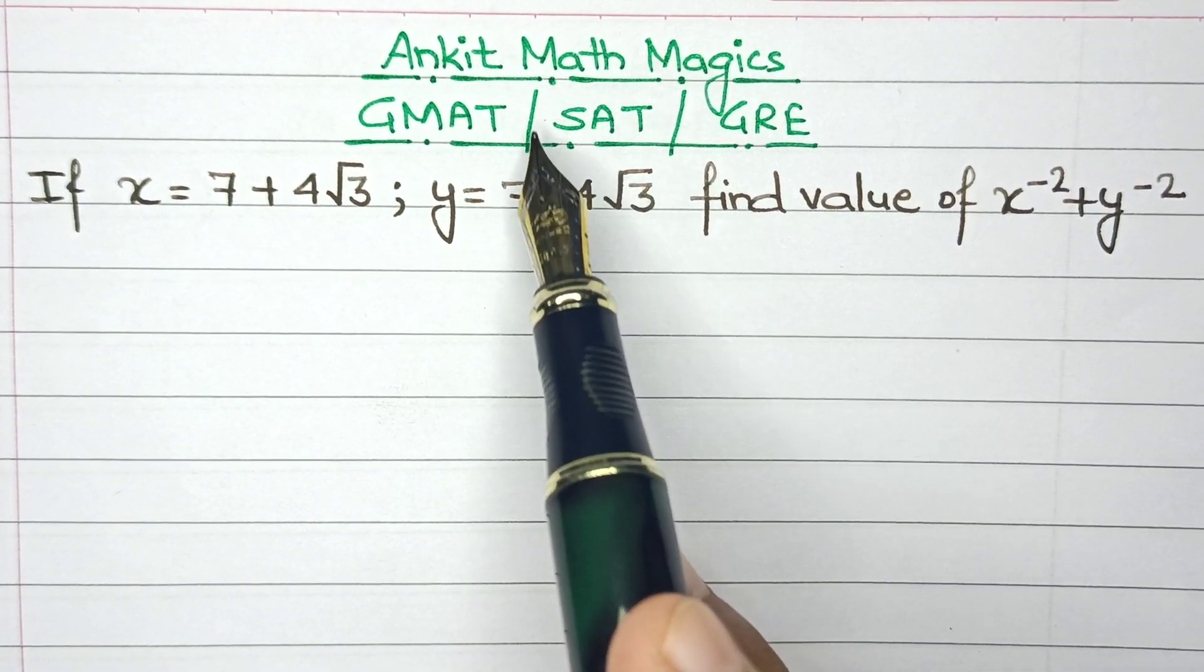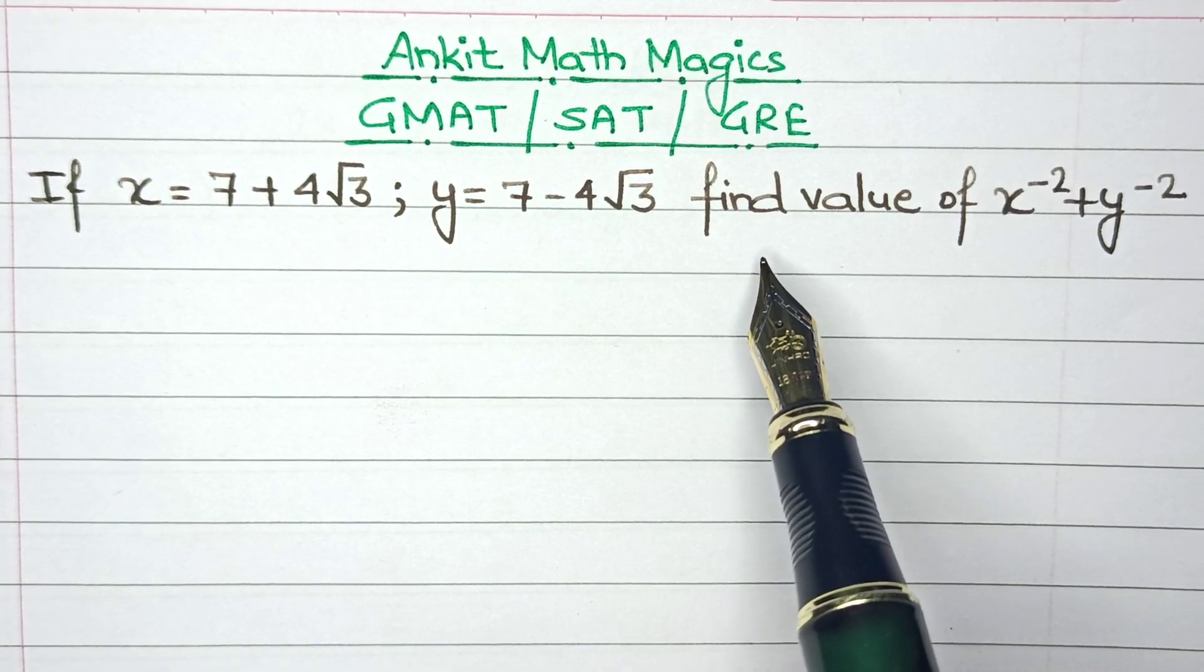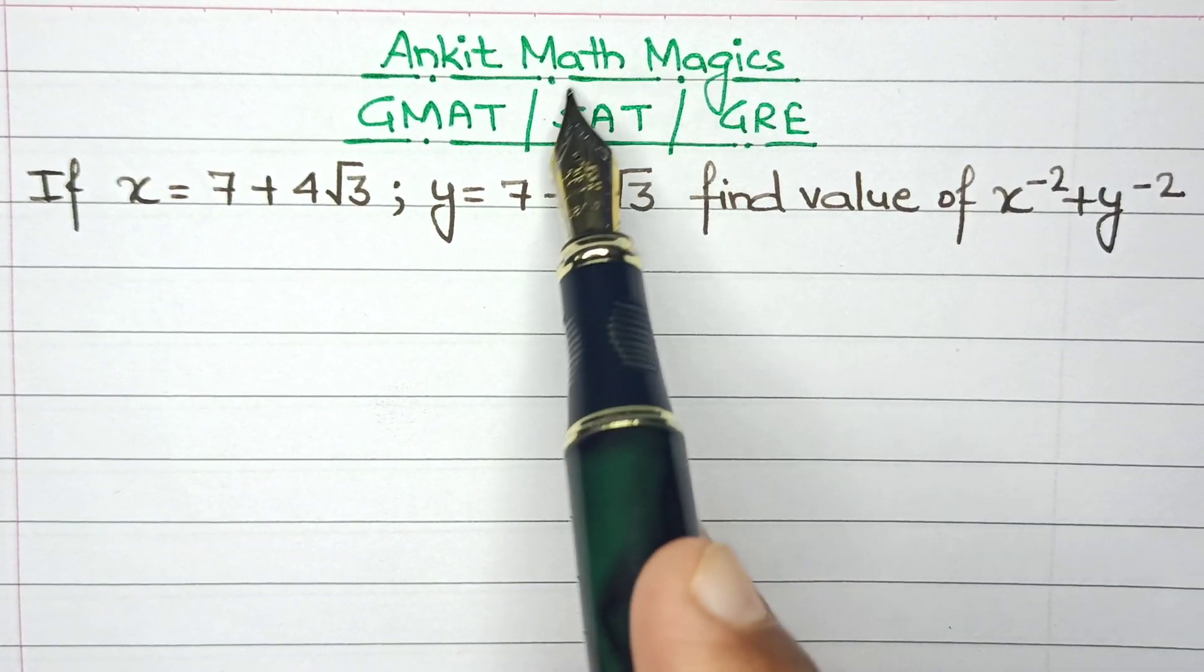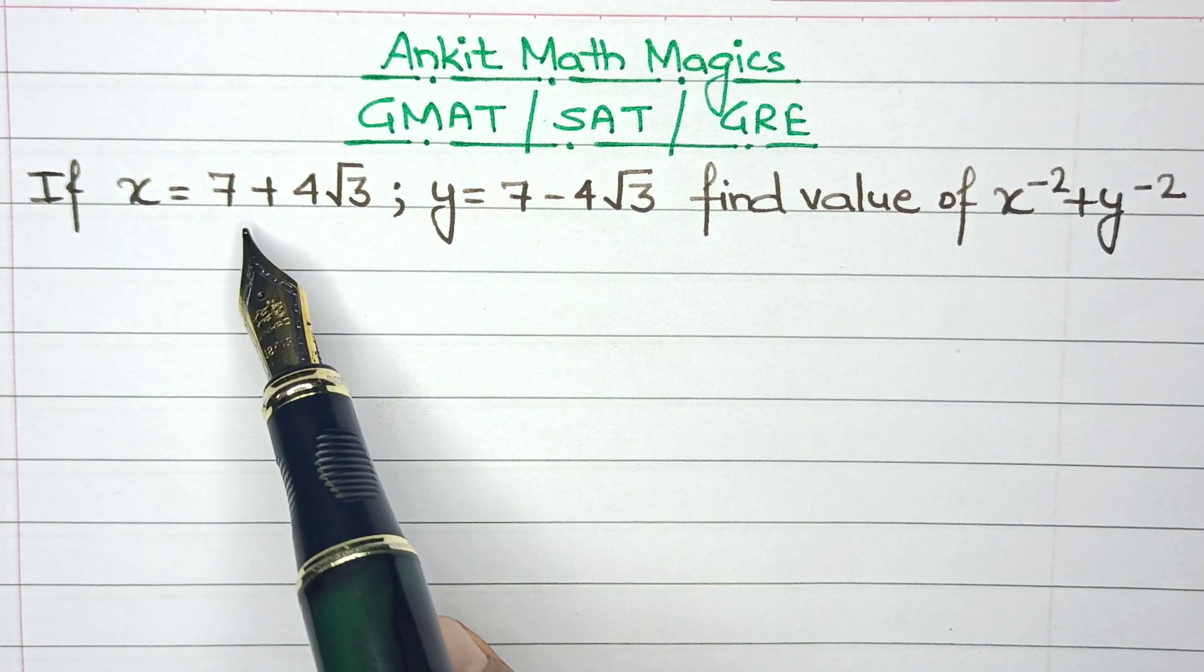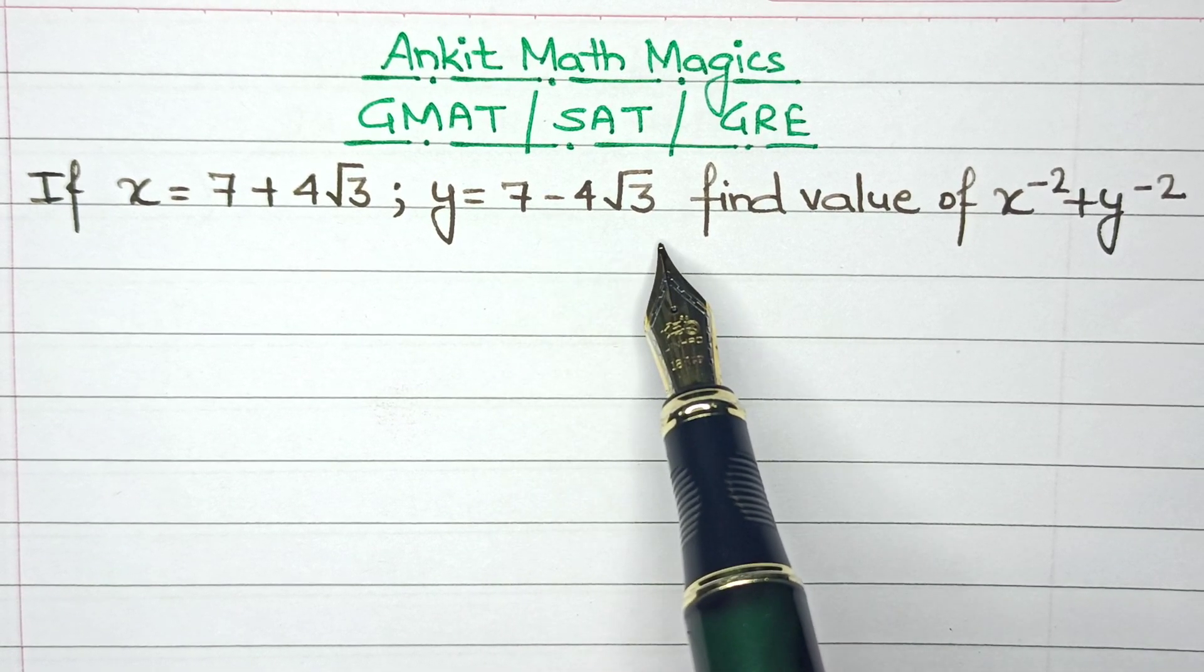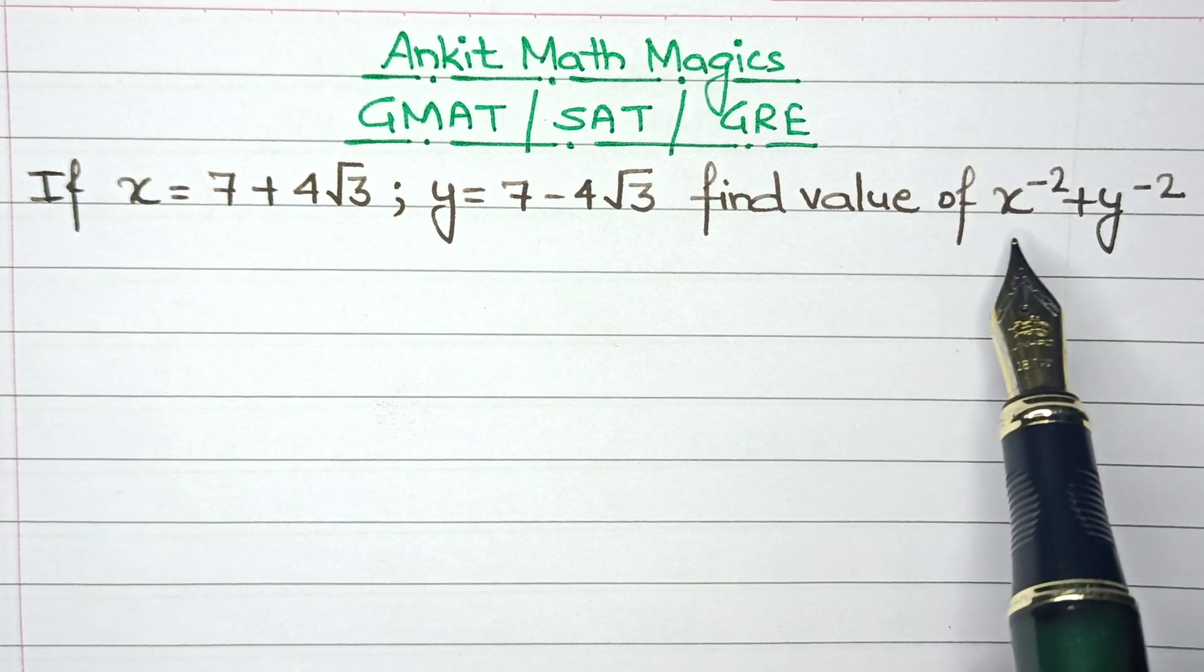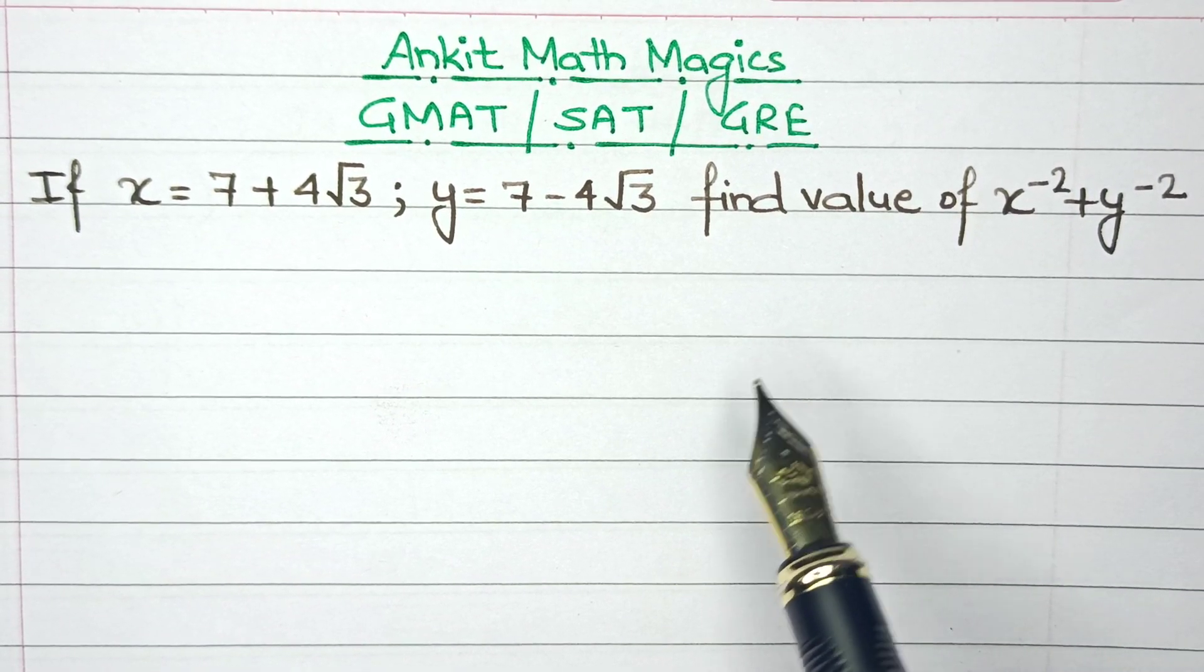The video for today will mainly focus on SAT preparation. This is the kind of question that you might be asked in your SAT exam. If x equals 7 plus 4 root 3 and the value of y is 7 minus 4 root of 3, then you have to calculate the value of x raised to the power minus 2 plus y raised to the power of minus 2.